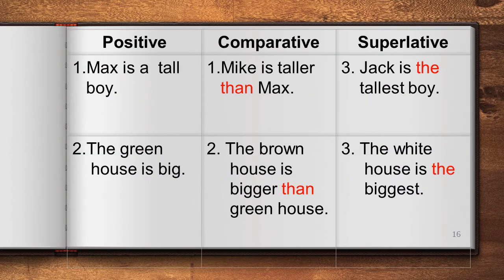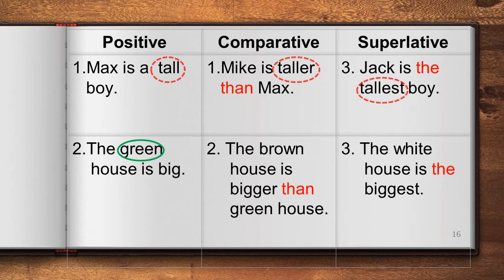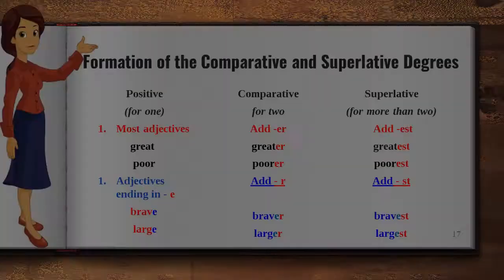Let's quickly recap degrees of comparison. Under positive, we have: Max is a tall boy. Under comparative: Mike is taller than Max. Under superlative: Jack is the tallest boy. For things — the green house is big; the brown house is bigger than the green house; and the white house is the biggest. Remember: always use 'than' with comparative degree and 'the' with superlative degree.